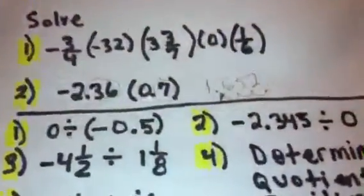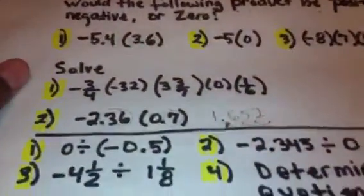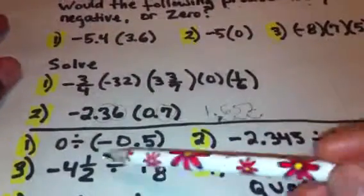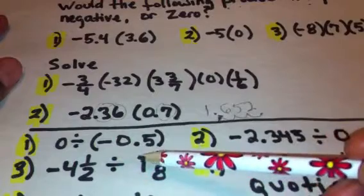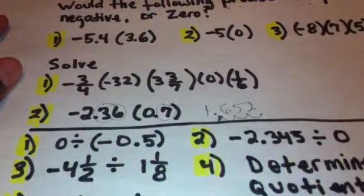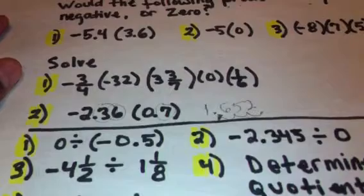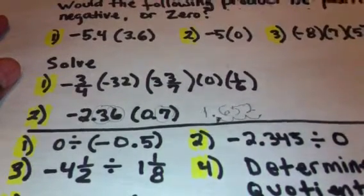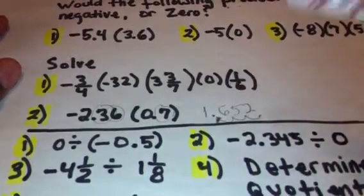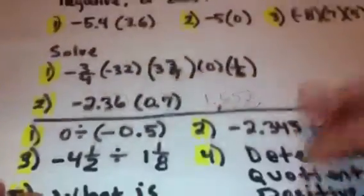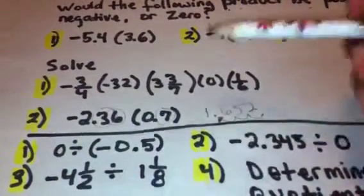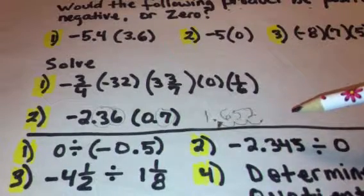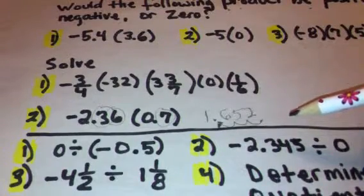Let's do some division problems really quickly. We have number one here with our division problems. Zero divided by negative 0.5. So basically, we're dealing with a property of zero here. And our answer is simply going to be zero. Our answer is going to be, the properties for division are actually different. It's either going to be zero or undefined.